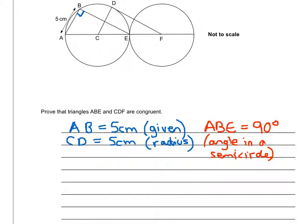Now, we need to use that to show that this angle here is also going to be 90 degrees. And the reason for that is because the radius of the circle and the tangent of the circle are always going to be at 90 degrees to each other. So the angle CDF is 90 degrees, and that's because the tangent and the radius meet.